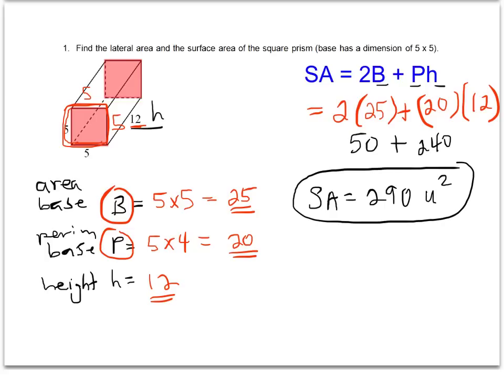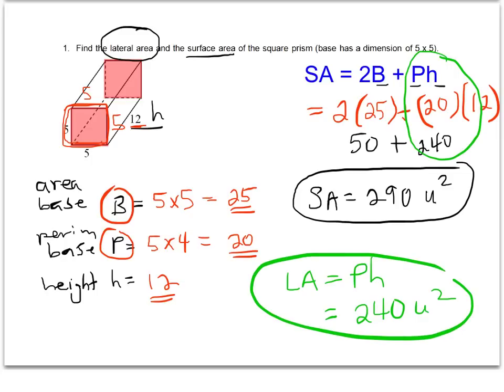So I answered the total surface area, but I was also asked to find the lateral area of this prism. And so to finish my problem, I'm going to find the lateral area, which I already did because I did the calculation of 20 times 12. My lateral area, perimeter times height, was 240. And that again is area, so that would be units squared as well. Make sure you're paying attention to what they're asking for, total surface area or lateral area, and giving the correct answer.